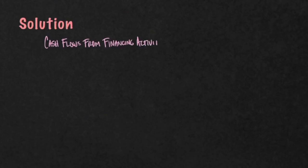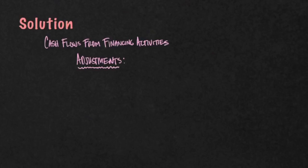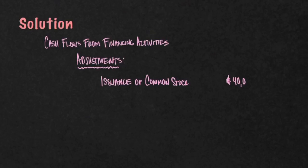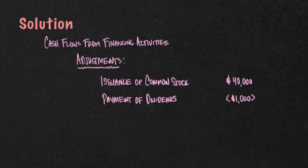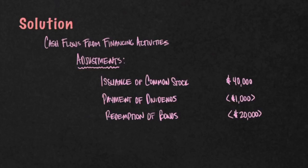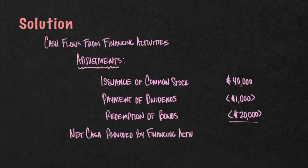The first thing you want to do is label the Financing Activities section — Cash Flows from Financing Activities. Then you want to label the adjustments, adjusting from the accrual basis of accounting to only cash. The first item is the issuance of common stock — when you issue stock, you get cash, so that's an increase of $40,000. Then McDowell's Corporation paid out dividends — that's a decrease of $1,000. Lastly, there was a redemption of bonds, meaning bonds were paid back of $20,000 — that's a decrease because you're paying back your bondholders. We net those three amounts, giving you the net cash provided by financing activities of positive $19,000.